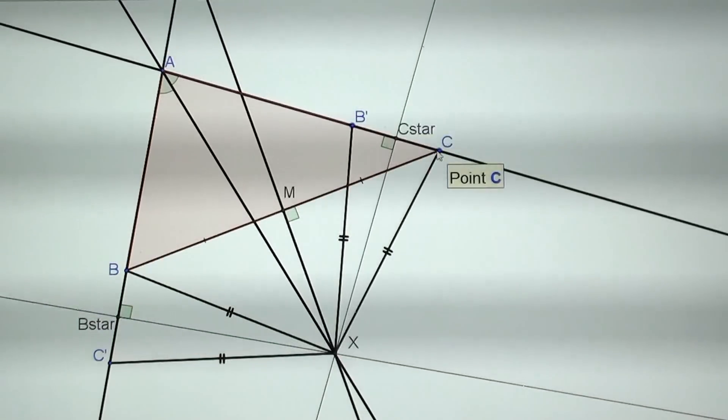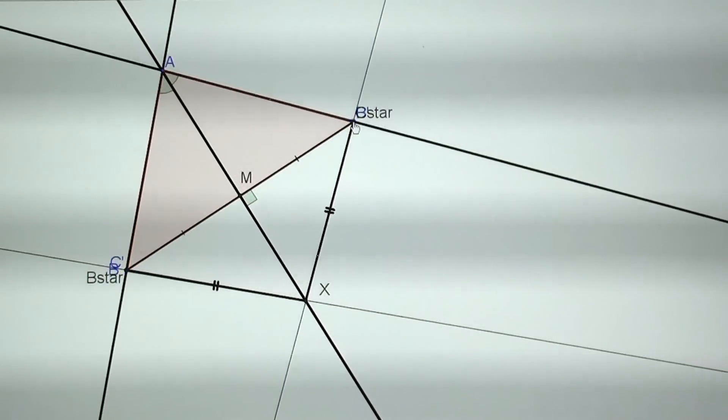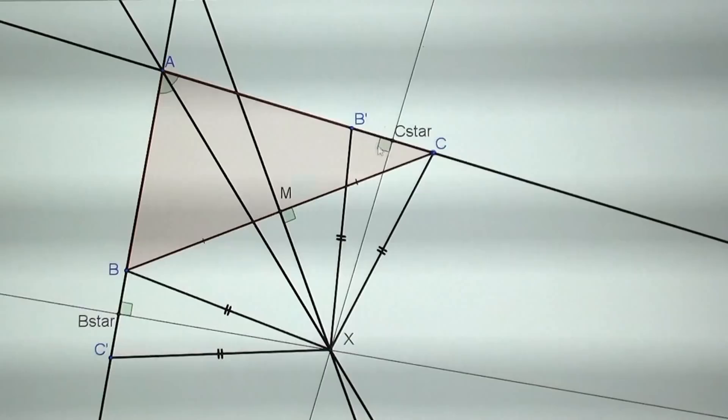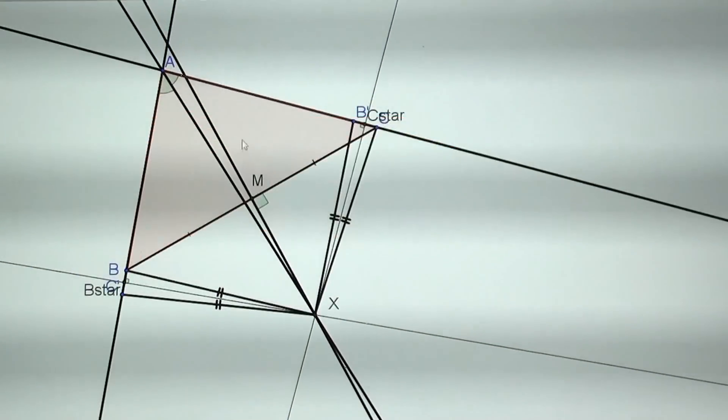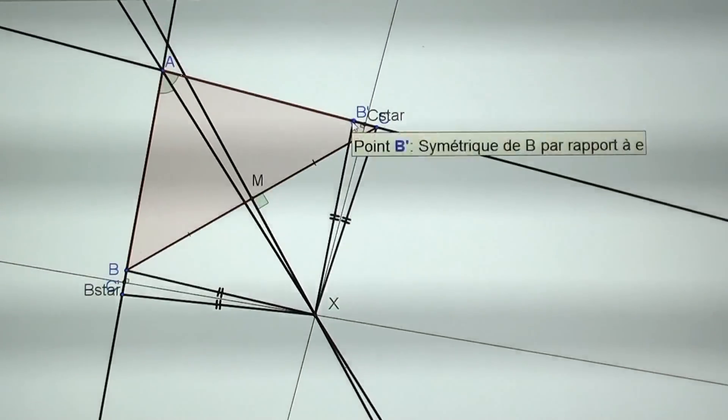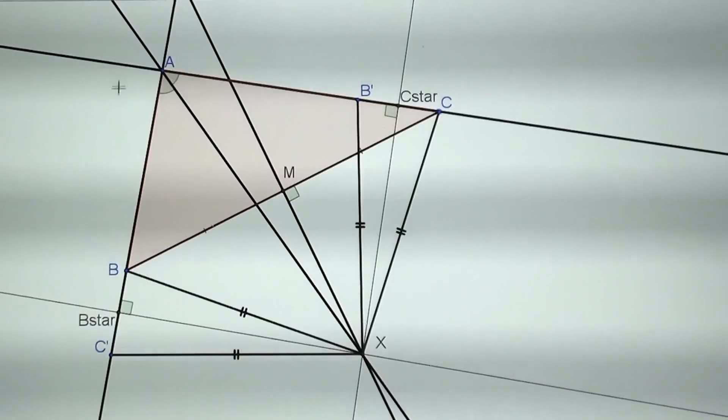And you might wonder what if the triangle is an isosceles triangle. Well it's very easy to show this. I'm going to make the triangle an isosceles triangle and what happens is that all those three points which are B prime, C star and C are now only one. And there's no way whatsoever that C star and B star can be either both at the same time inside or either outside of the triangle.